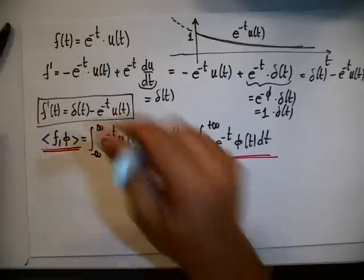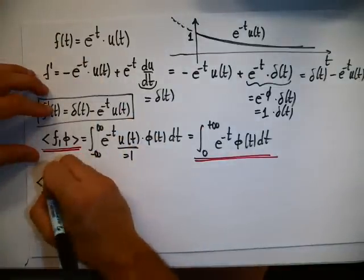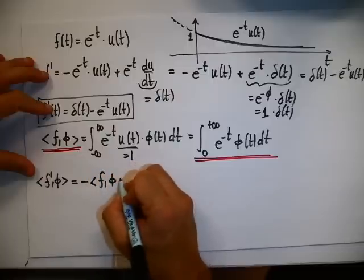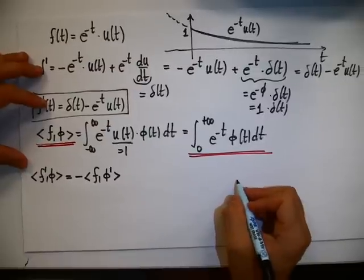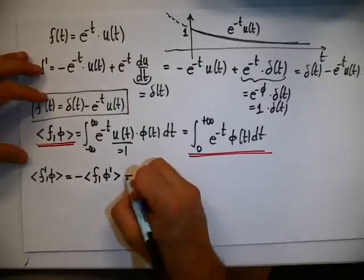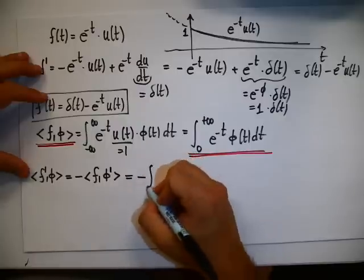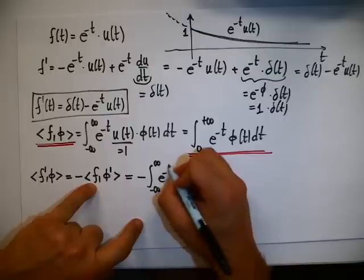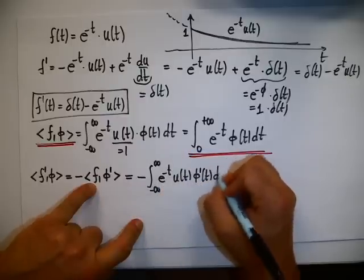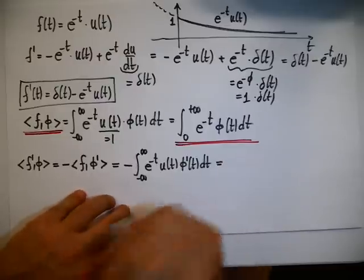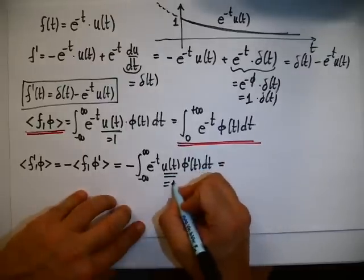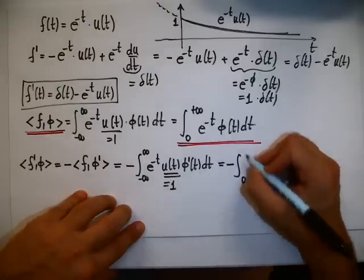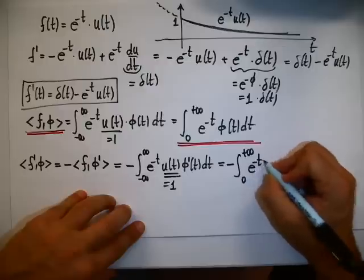Now let's compute the first derivative. We need f'(φ). By definition, this equals minus f comma φ prime, which equals minus the integral from minus infinity to infinity of e^{-t} u(t) φ'(t) dt. Since u(t) equals one on zero to infinity, this becomes minus the integral from zero to infinity of e^{-t} φ'(t) dt. We see we have a first derivative inside an integral — that's a signal to do integration by parts.